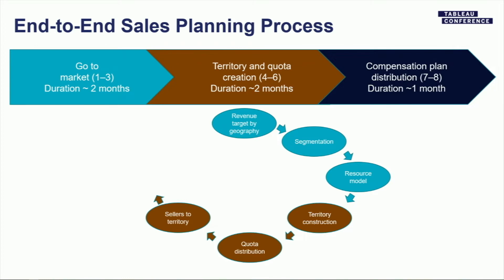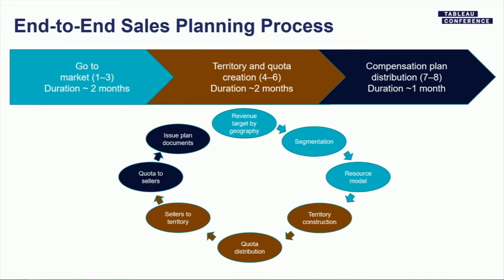Sellers to territories is as straightforward as it sounds — you've constructed territories, you know the quota rolls, now you're putting people into seats. Think of it like a sports roster: you have positions that need to be filled. So Jim gets these three territories, Sue gets these five. The final phase is the shortest but covers your terms and conditions — what are the comp plans, the official legal HR distribution, so people know how they're going to make money and what they're expected to do.